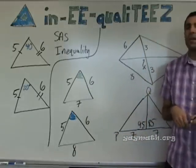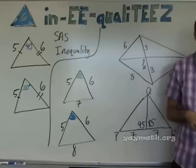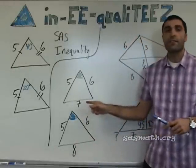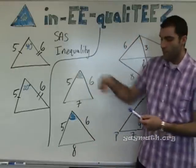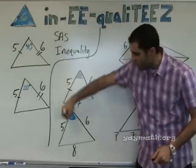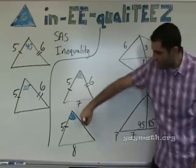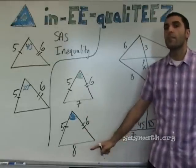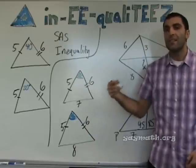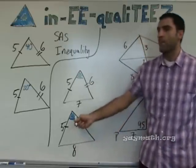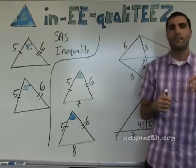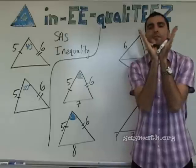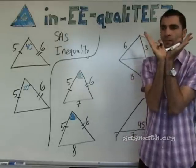Which angle is bigger — the green one or the blue one? The blue one. Why is the blue one bigger? Because the side is larger. So this is the second rule. If you have two sides that are the same — this is the same as this, that's one side; this is the same as this, that's two sides — and then a third side that's different, then the angle opposite that third side will be equally different. Meaning the bigger side will have the bigger angle. The angle is smaller, the length is smaller; the angle is bigger, the length is bigger.